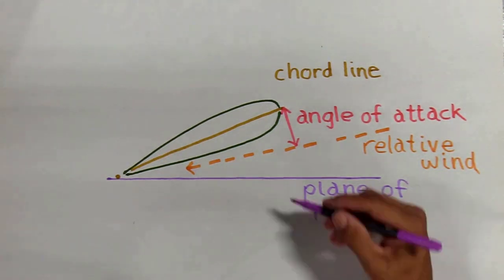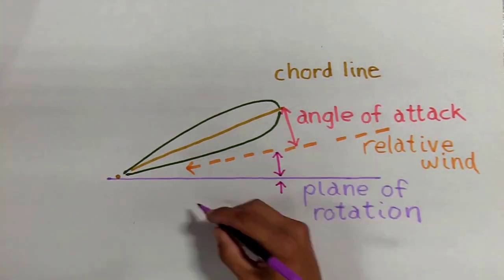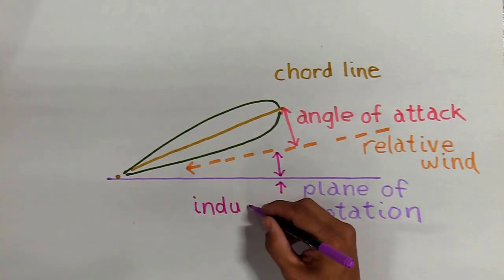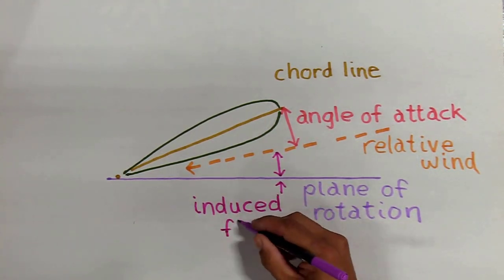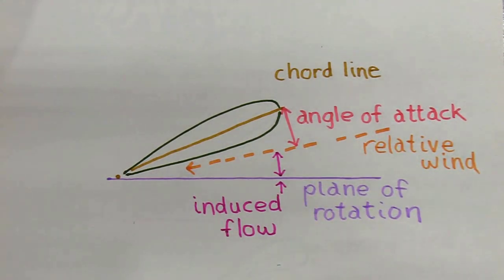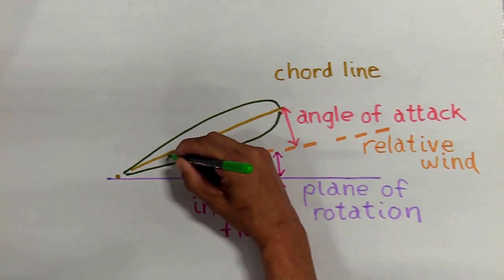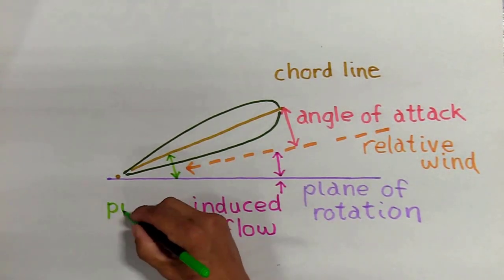Now down here, this is what we consider to be our induced flow. Induced flow is actually bad. We do not like it, and you can see if you have more induced flow you have less angle of attack, meaning you have less lift.